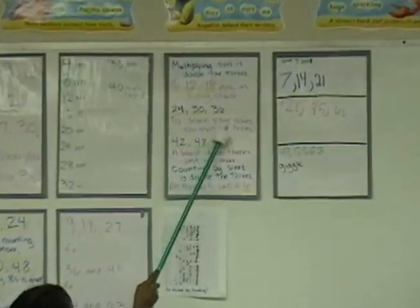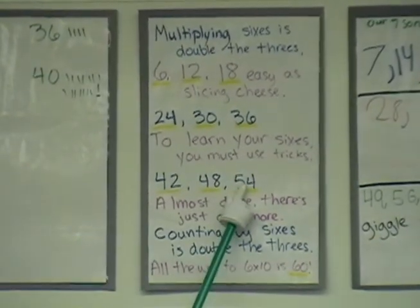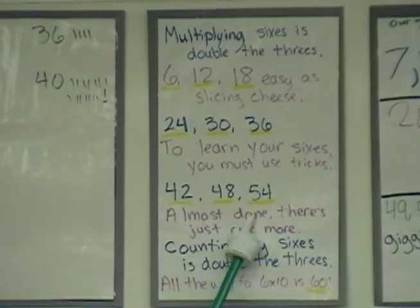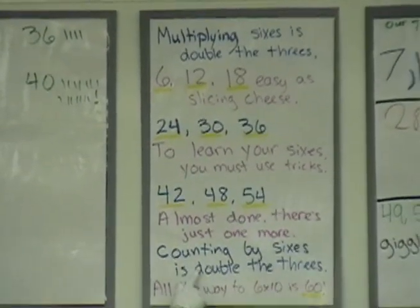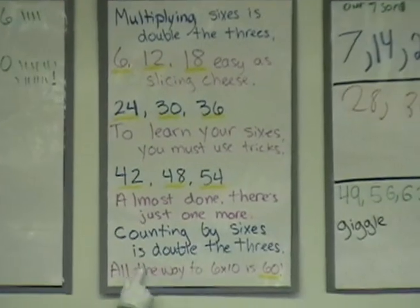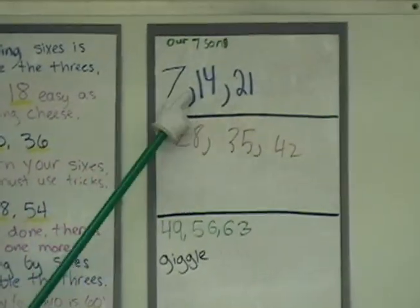To learn your 6's you must use tricks. 42, 48, 54. Almost done, there's just one more. Counting by 6's is double the 3's, all the way to 6 times 10 is 60.